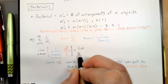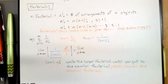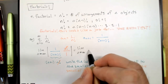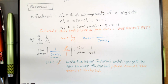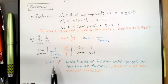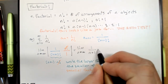Now we're taking the limit as n goes to infinity. I'll drop the absolute value signs because the n's are all positive. All we're left with is 1 over (n+1), and the limit of 1 over (n+1) as n goes to infinity equals 0.